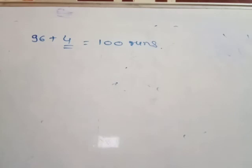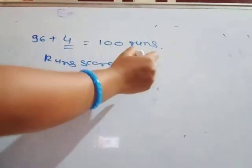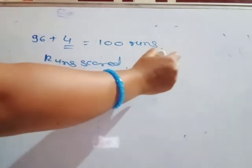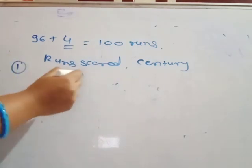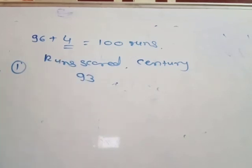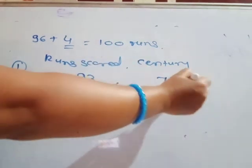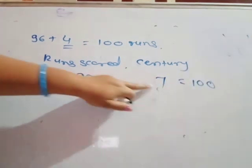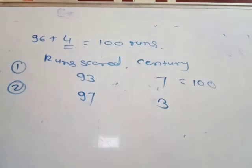How many runs do these players need to complete a century? See here — runs scored given, and how many runs needed to complete a century? Player needs 3 more runs: 97 plus 3 is equal to 100.